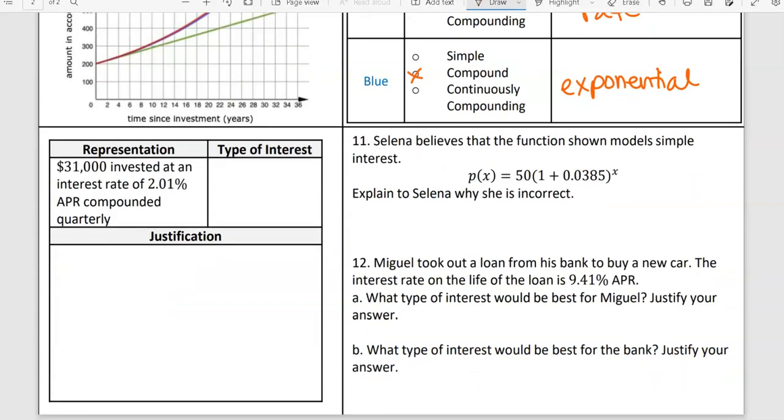Here we go. We have a representation here. It wants you to figure out what type of interest is being described and how do you know. We have $31,000 invested at an interest rate of 2.01% APR compounded quarterly. We're not doing any math, it just wants to know what kind of interest is this. Simple, compounded, or compounded continuously? Justify. So because it literally says the word compounded, that's a good hint, right? So compounded is used and it states quarterly. So we know it's happening multiple times in one year. It's not continuous, it's only happening four times. Continuous means it's always happening.